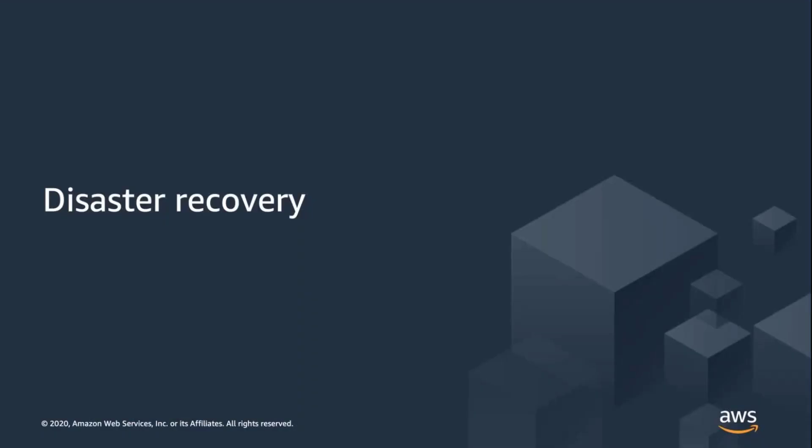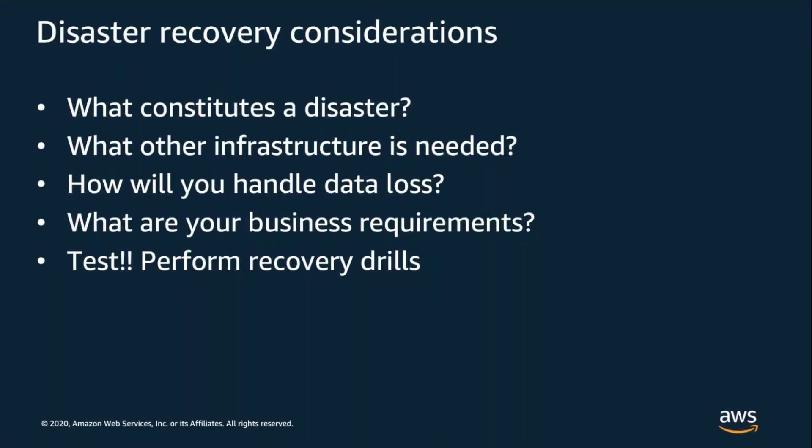Now let's talk about how RDS helps you recover from larger scale failures. A disaster is anything that affects the availability of your database beyond what multi-AZ can handle — for example, a region-level failure, multiple simultaneous hardware failures, or an application bug that affects the integrity of your data. As with high availability, there are things to think about when planning for disaster recovery. For example, what constitutes a disaster for your application? Disaster recovery actions are not trivial, so it's important to understand which situations require recovery and which scenarios make sense to just wait out.